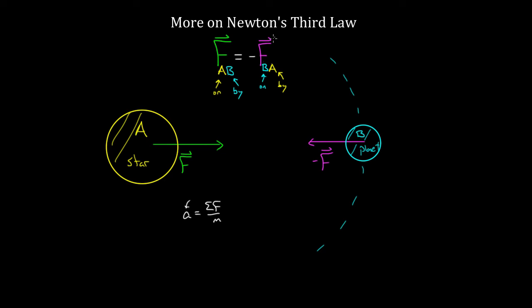Another misconception is that people think there might be a delay in the creation of the Newton's third law partner force. People think maybe if I exert the first force fast enough, I can catch the universe sleeping and there might be some delay — but that's not true. Newton's third law is universal. No matter what the situation, no matter what the acceleration or motion, whether one object is bigger or smaller, if they are Newton's third law partner forces, they are equal, they are opposite, and they are always equal and opposite at every given moment in time.